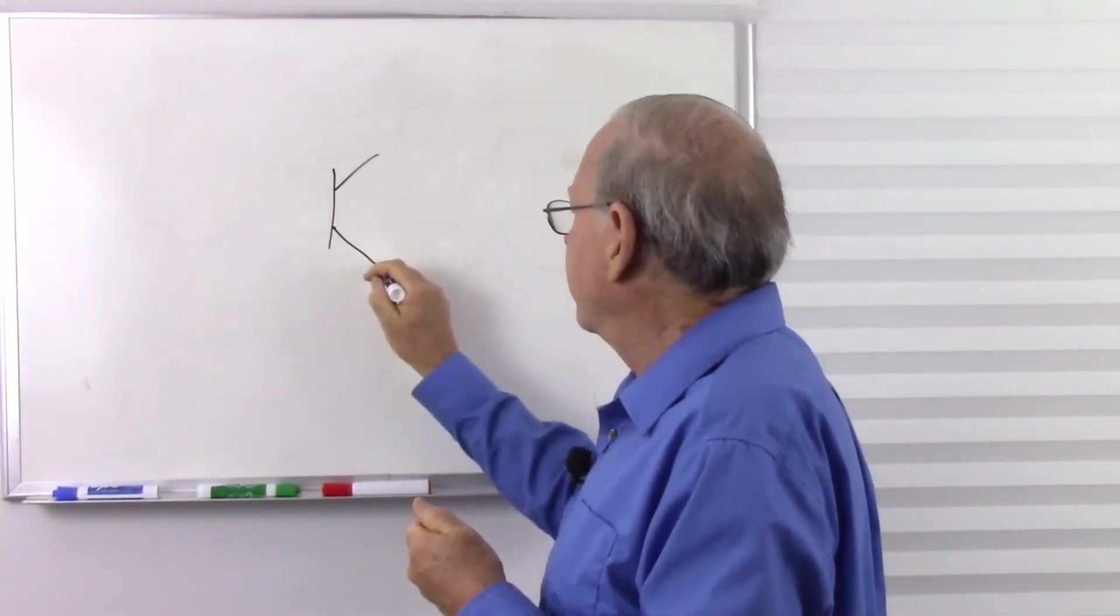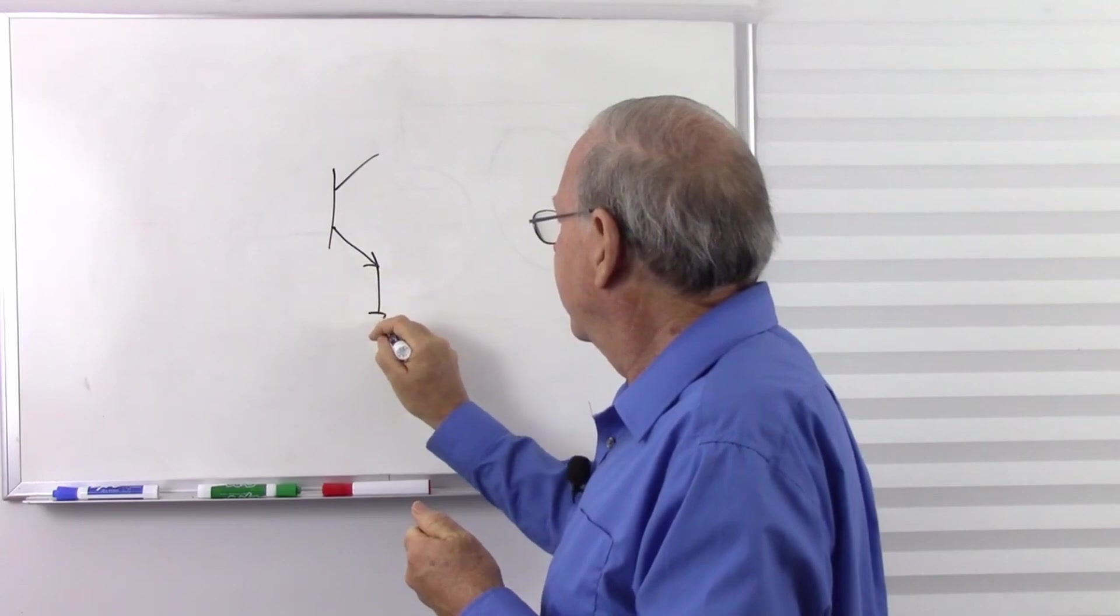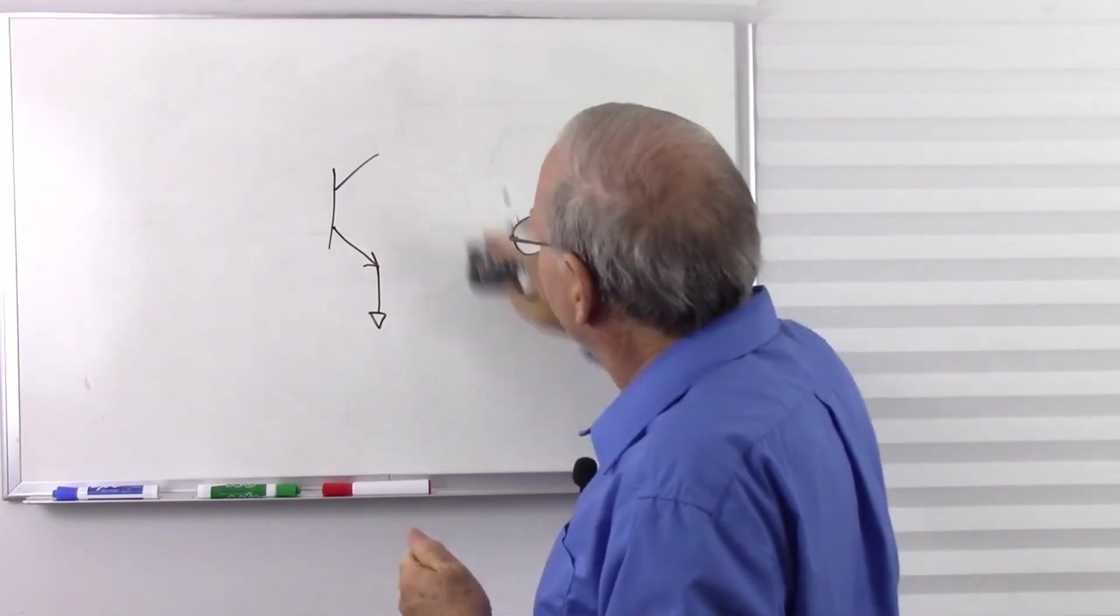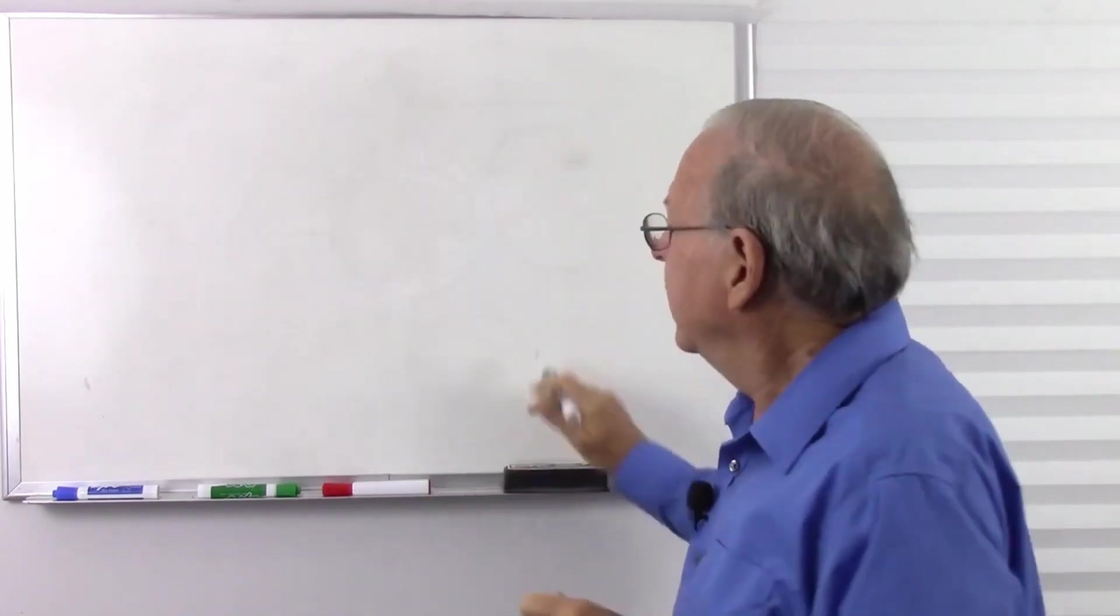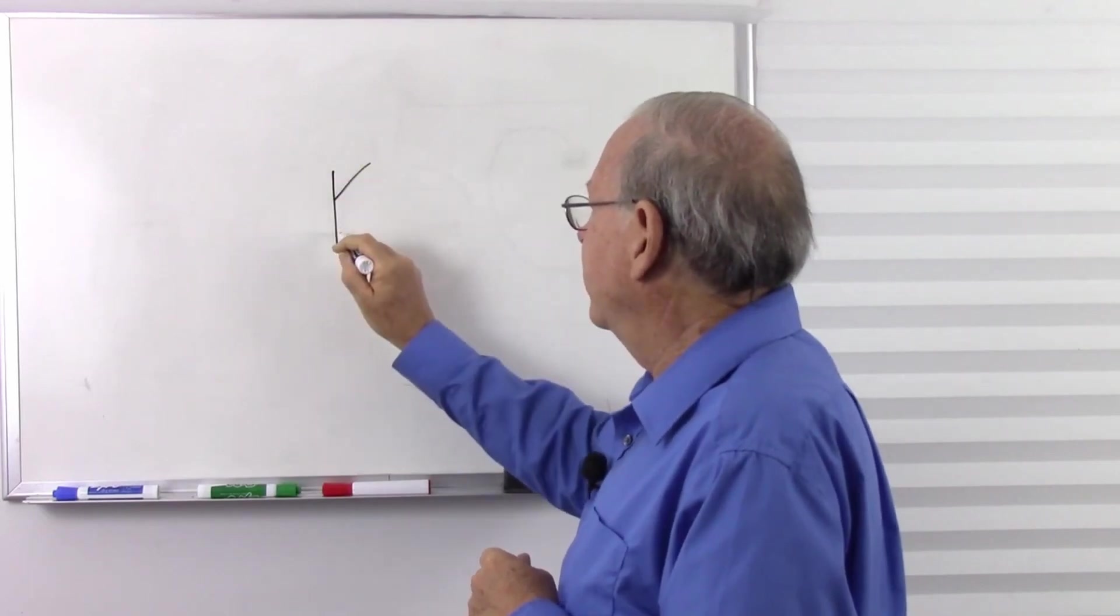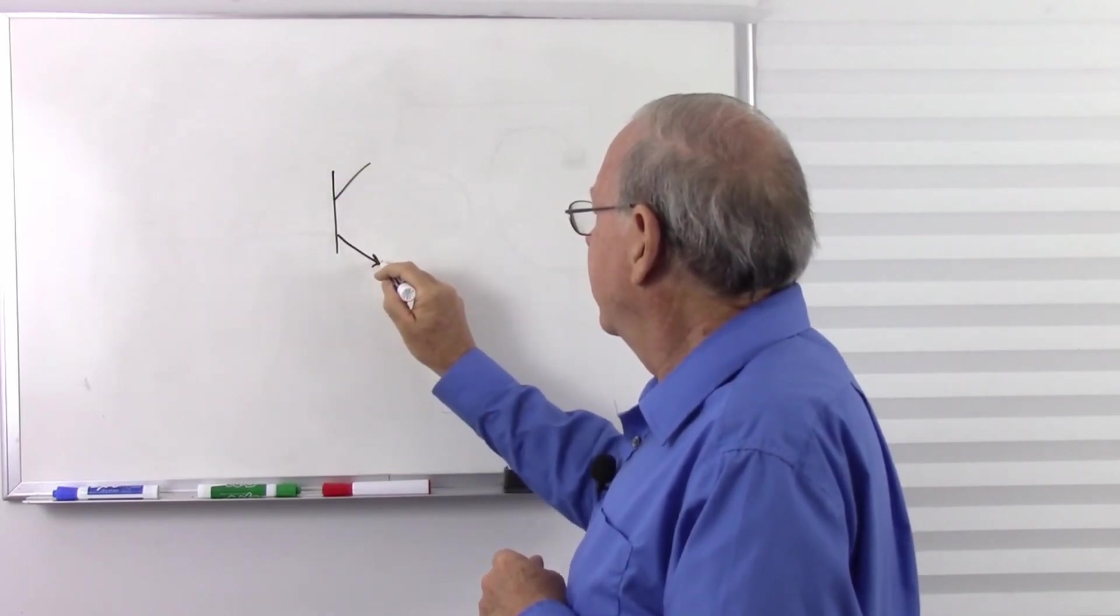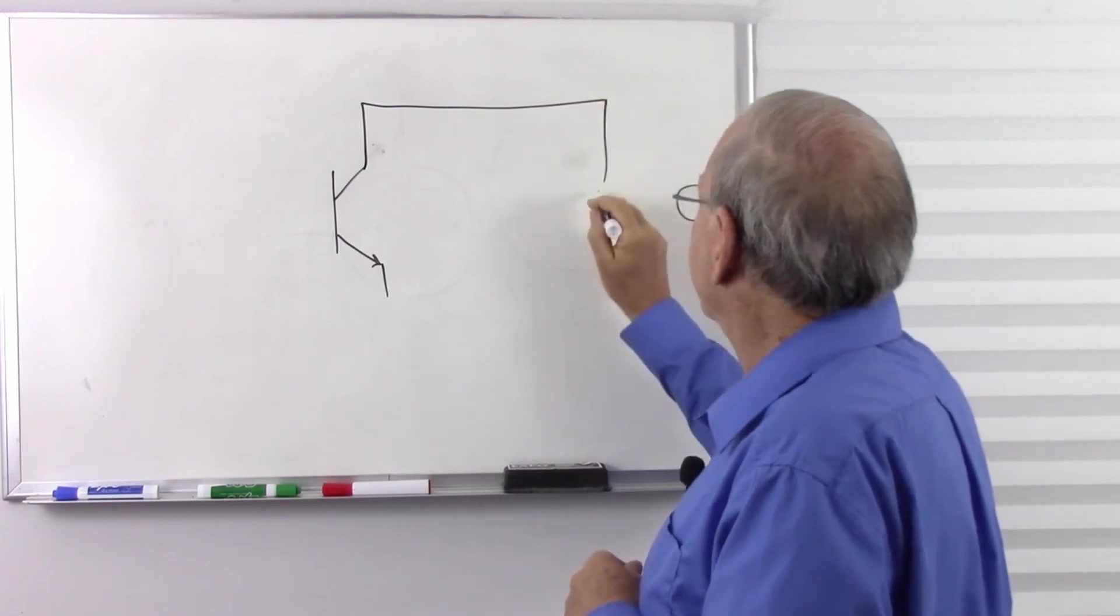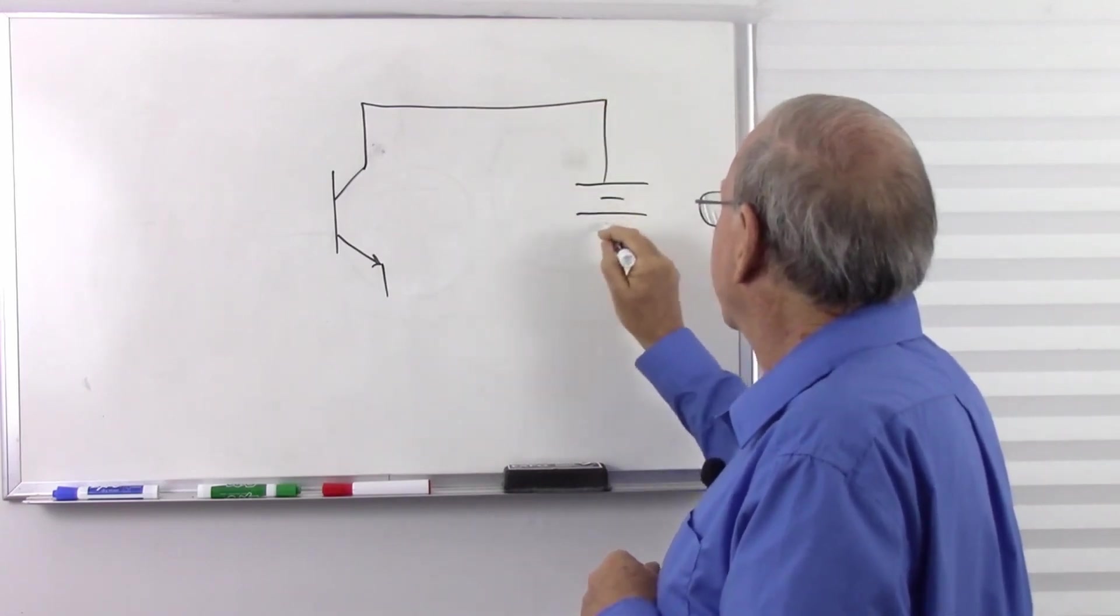Let's just draw a real quick and easy transistor circuit here. A simple common emitter circuit. In fact, let's go ahead and draw this the same way we did the vacuum tube circuit, because it would be very similar. As similar as possible, because we can.